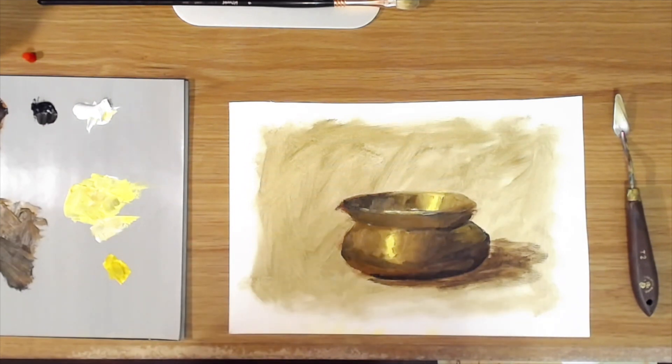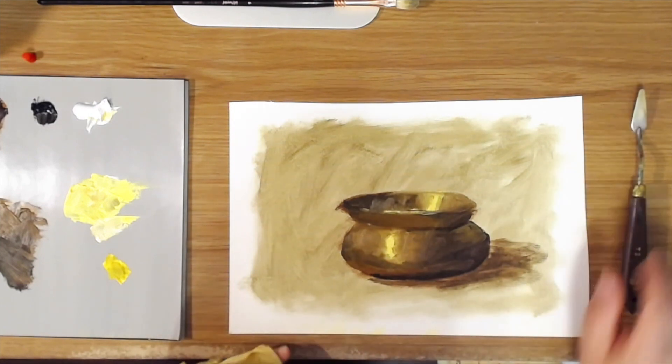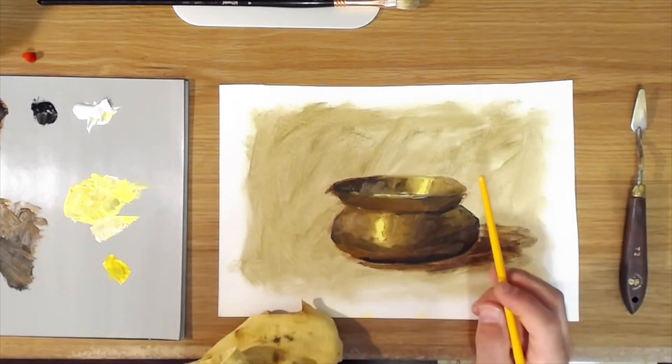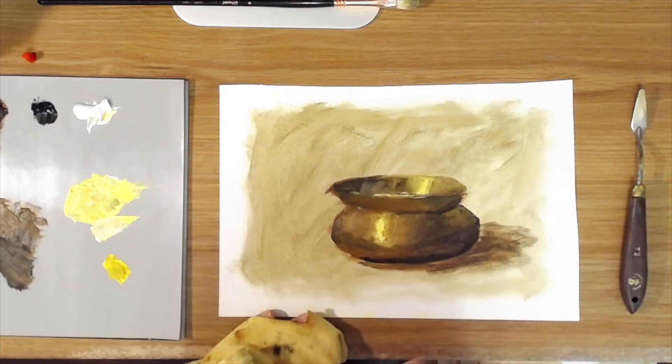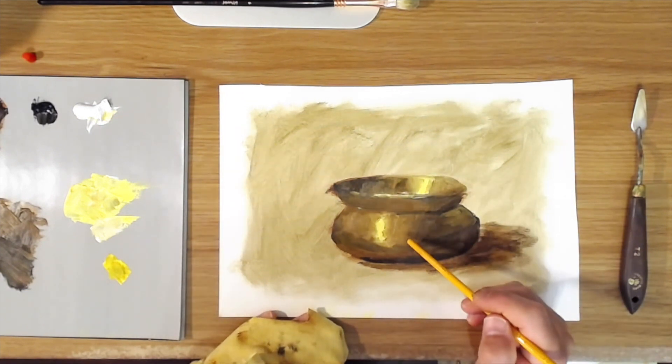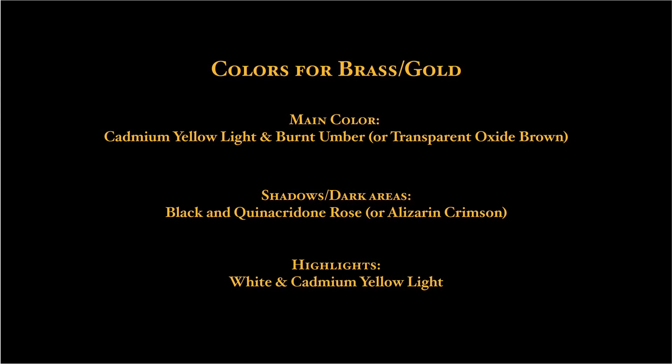That's just a very quick demo to show you how to paint a shiny gold or brass object. Just to recap very quickly, the main color of the brass will be a mixture of burnt umber and cadmium yellow light. Your darker areas will be that mixture with a little black and quinacridone rose or alizarin crimson mixed in. Your highlights and real shiny areas will be white mixed with cadmium yellow light.